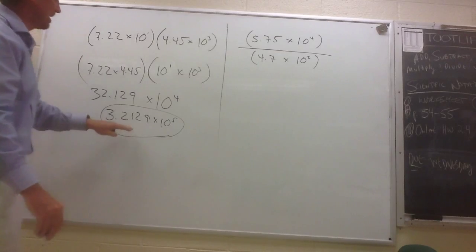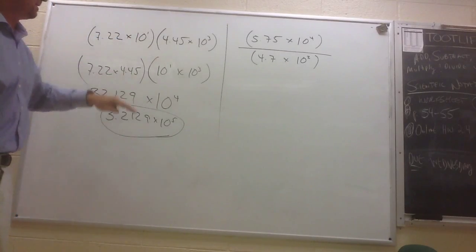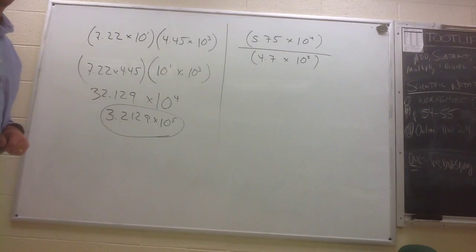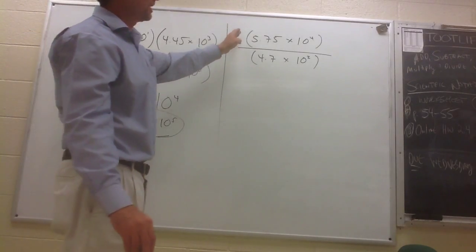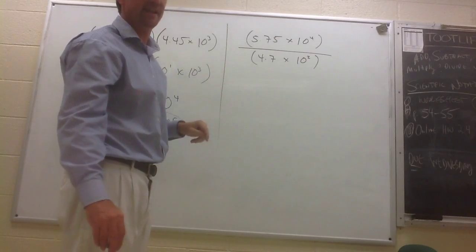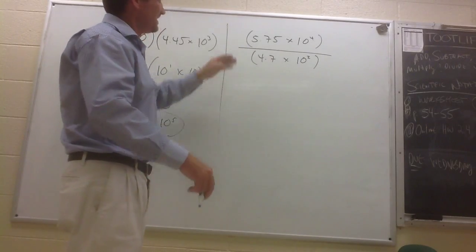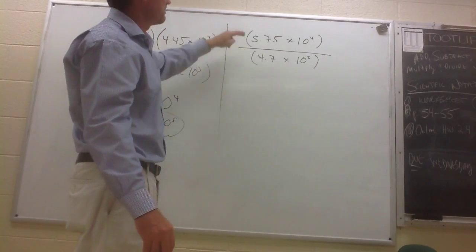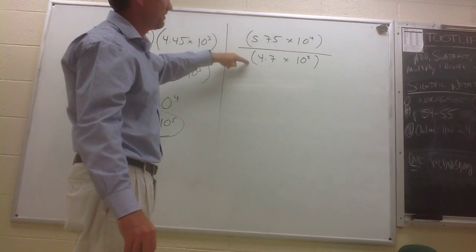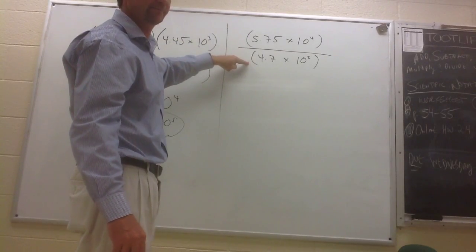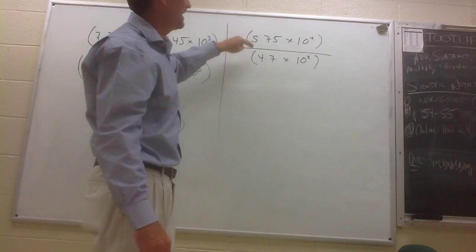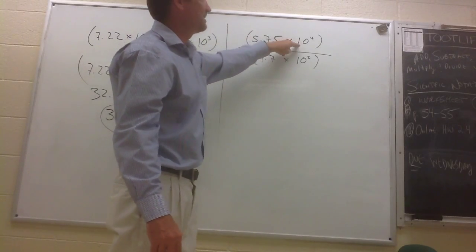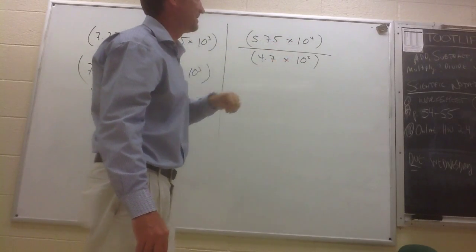And now we have a product written in scientific notation. Now, a division problem, actually the easiest way to tackle a division problem when it's written in scientific notation, take it as two separate problems. 5.75 divided by 4.7, and then we'll multiply that by 10 to the 4th divided by 10 squared.